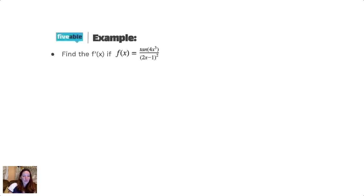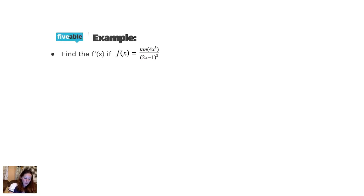Let's do a chain rule quotient problem. Find f prime of x if f of x equals tangent of 4x cubed, over (2x minus 1) squared. I'm going to take my own advice here and start by writing that original denominator squared — (2x minus 1) squared, all squared — so that I don't forget it later. That part's done, now I'm going to find my two derivatives.